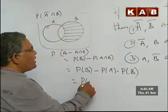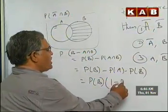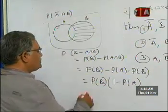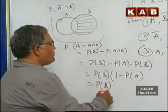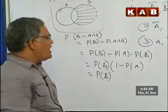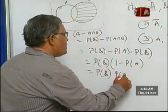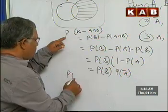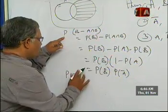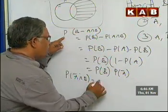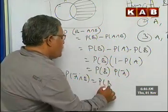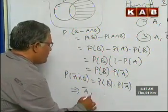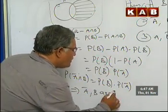Taking probability of B common, we get probability of B into 1 minus probability of A, which is probability of B into probability of A̅. So probability of A̅ intersection B equals probability of B into probability of A̅, which implies A̅ and B are independent events.